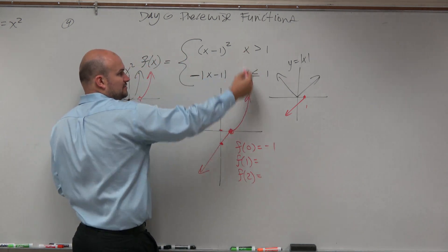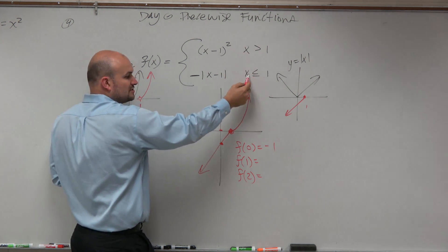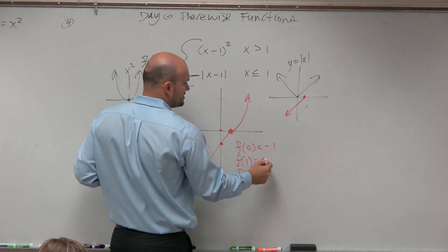f of 1. Which function deals with 1? Well, this is greater than 1. This is less than or equal to. So it's going to be this one. 1 minus 1 is 0. Absolute value of 0 is 0. 0 times negative 1 is 0.